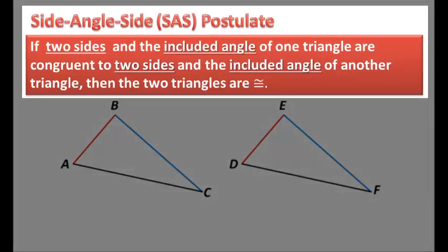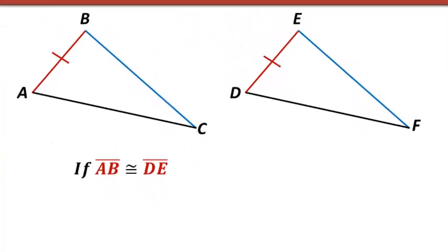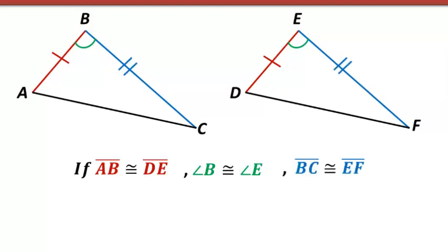Now let's take a look at the side-angle-side postulate. It says that if two sides and the included angle of one triangle are congruent to two sides and the included angle of another triangle, then the two triangles are congruent. For example, if segment AB is congruent to segment DE, and the included angle — meaning the angle in between the two sides — has angle B congruent to angle E, then the next side must be segment BC congruent to segment EF, because the angle has to be in between the two sides.